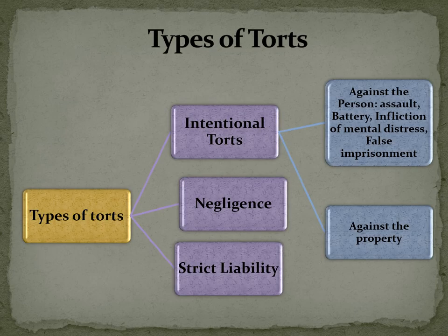Types of Torts. Broadly there are three types of torts: intentional torts, negligence, and strict liability. Under intentional torts there are two types: first, against the person — which includes assault, battery, infliction of mental distress, false imprisonment, etc. — and second, against property. Negligence is whenever someone is expected to fulfill a legal duty towards another and commits a violation of that legal duty. Strict liability is when a person is liable without any proof and is strictly liable for a tort. Strict liability I will explain in a next video.